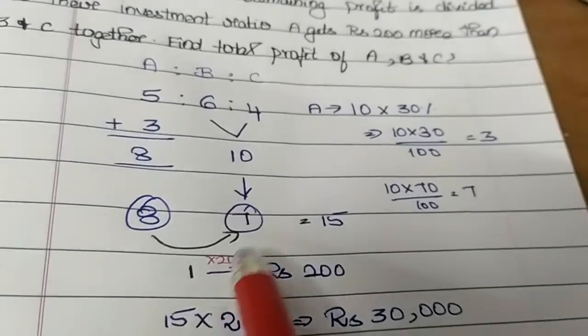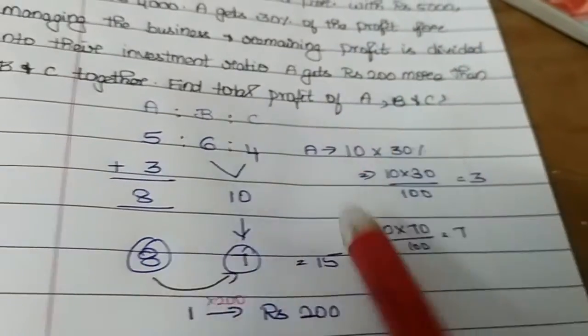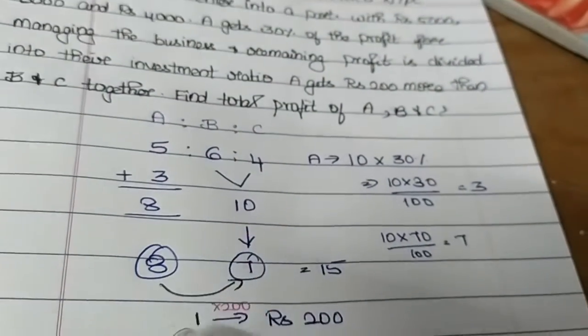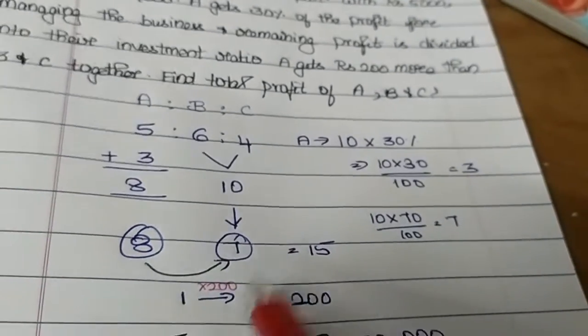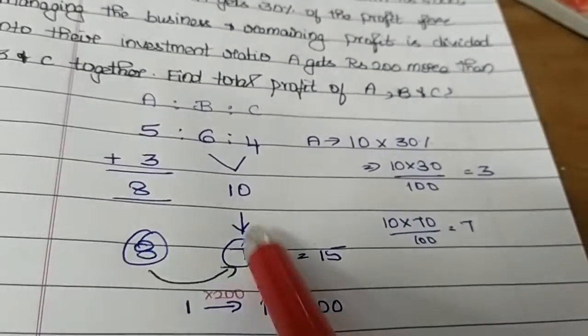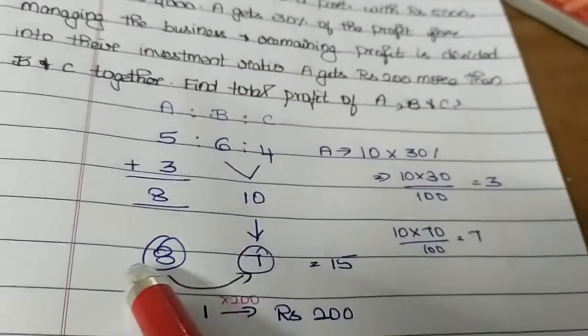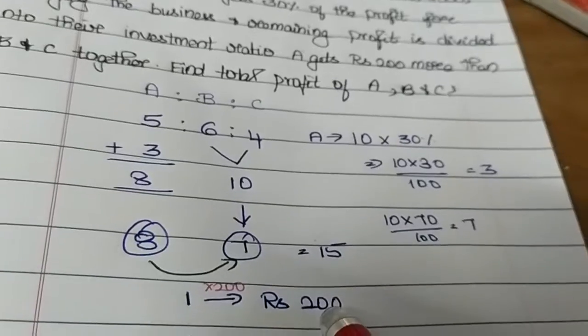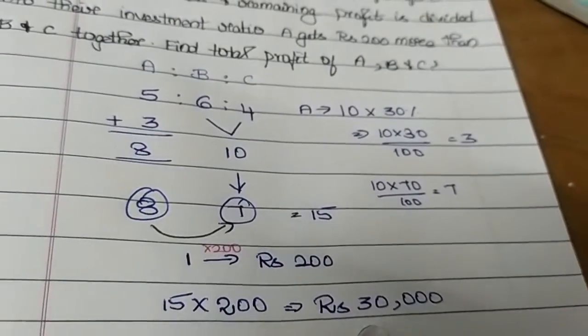A gets 200 more than C. That's 2 parts difference. So 1 part equals 200 rupees. Total ratio is 8 plus 7. 8 is 2 to 7. Total is 15. 15 times 200 equals rupees 30,000.